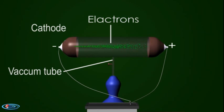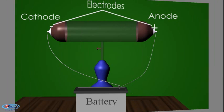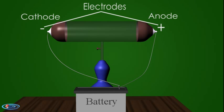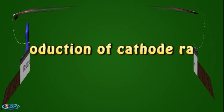A cathode ray is a beam of electrons that travel from the negatively charged to positively charged end of a vacuum tube. The electrode at the negative end is called a cathode, and the electrode at the positive end is called an anode.